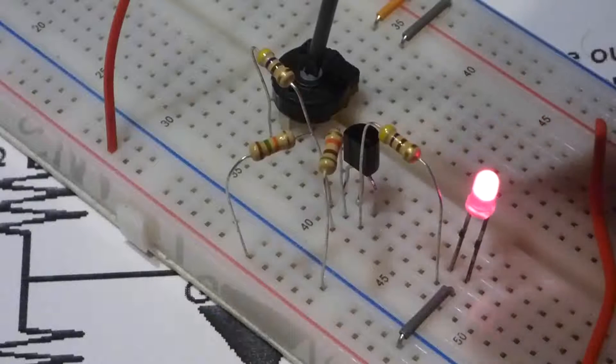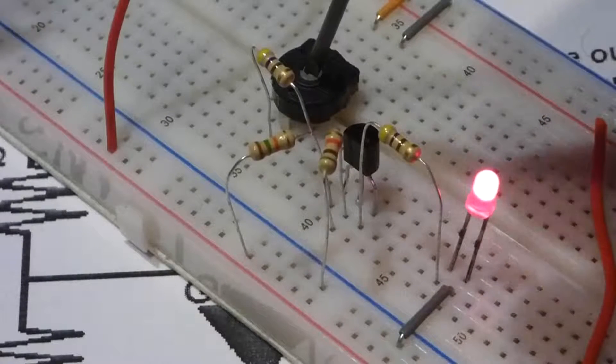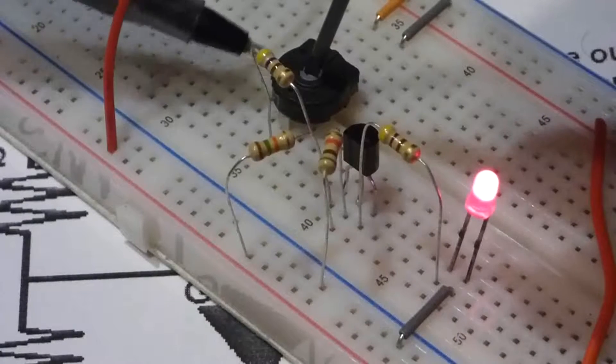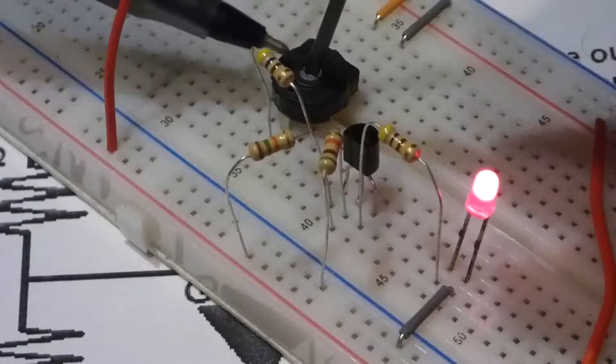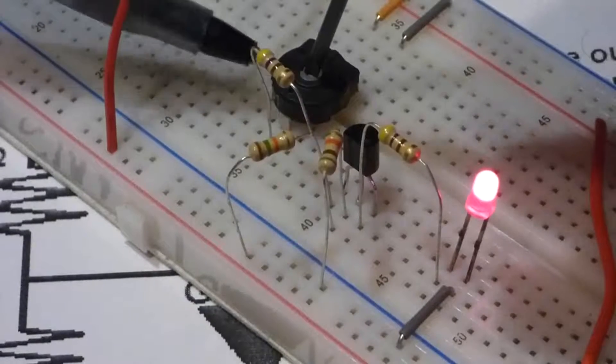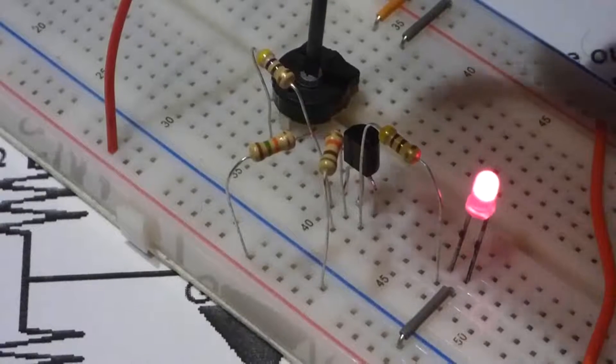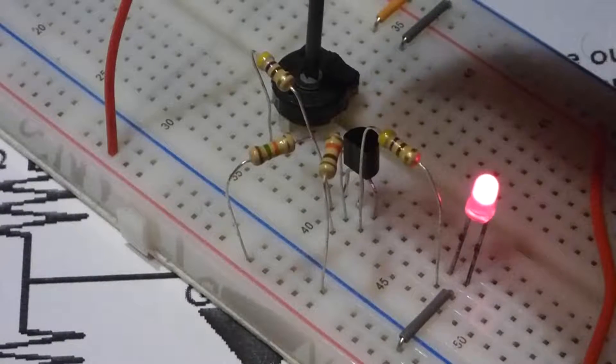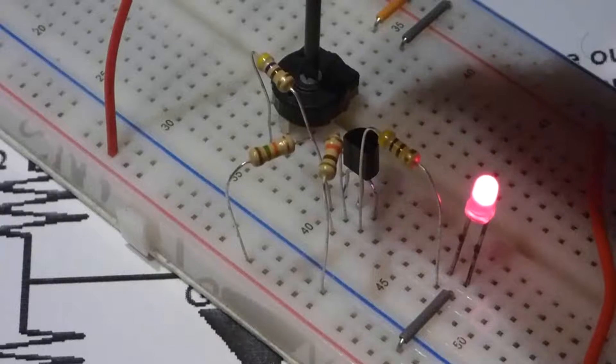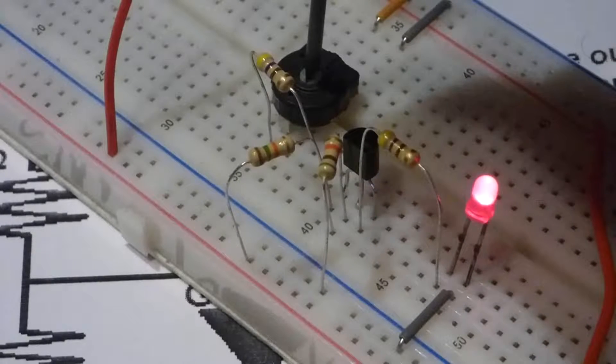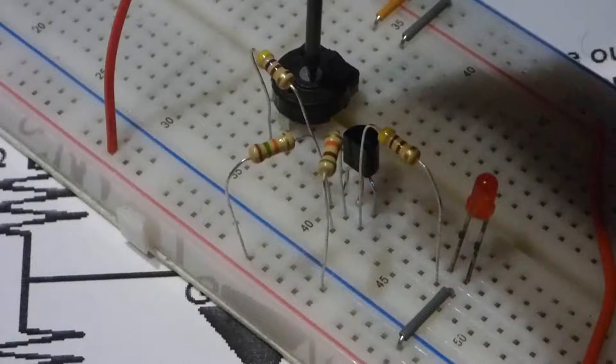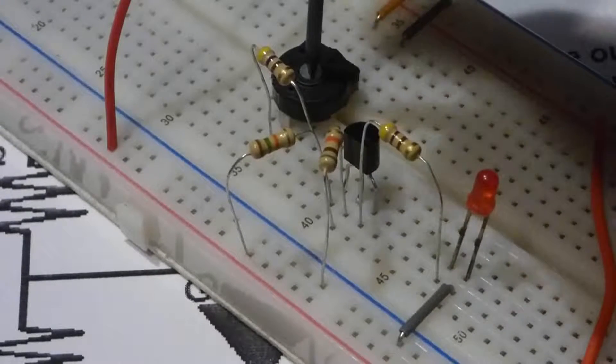And now you notice that the LED turned on. So we're turned to about there—so it's about three-fourths or two-thirds of the way up. And now when I turn it down, so it's probably about six volts in that area, maybe seven, somewhere around there. And now we turn it down and the LED turns off.